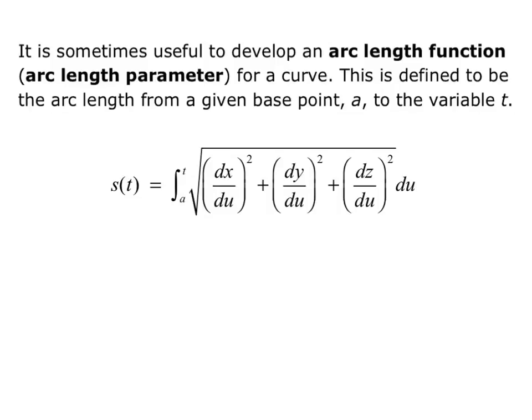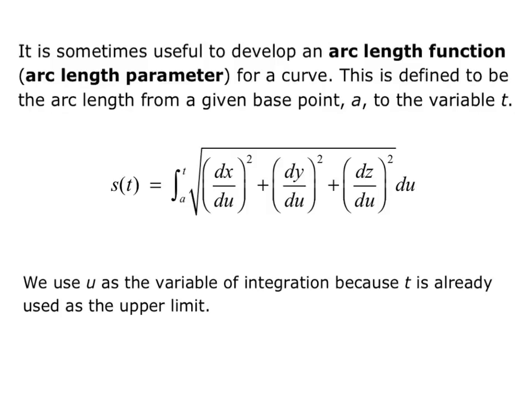Our function is s of t equals the integral from A to t of the square root of (dx/du)² plus (dy/du)² plus (dz/du)², with integrating factor du. We use u as the variable of integration because t is already used as the upper limit. This function uses the same concept as finding arc length — it is the magnitude of the velocity times du, or the magnitude of velocity evaluated with u as the independent variable.